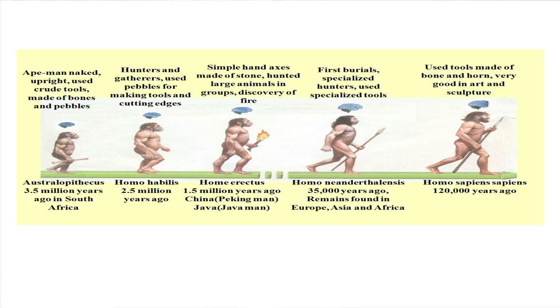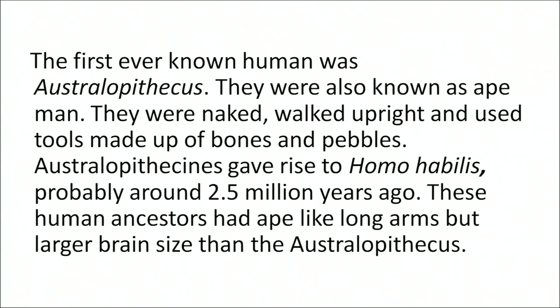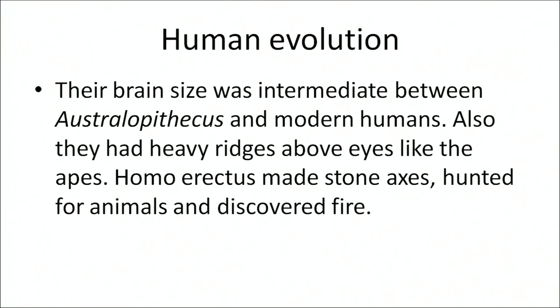Homo sapiens is the scientific name of humans, meaning the wise human. The first ever known human was Australopithecus, also known as ape-men. They were naked, walked upright, and used tools made of bones and pebbles. Australopithecus gave rise to Homo habilis, probably around 2.5 million years ago. These human ancestors had ape-like long arms but a larger brain size than Australopithecus — intermediate between Australopithecus and modern humans.